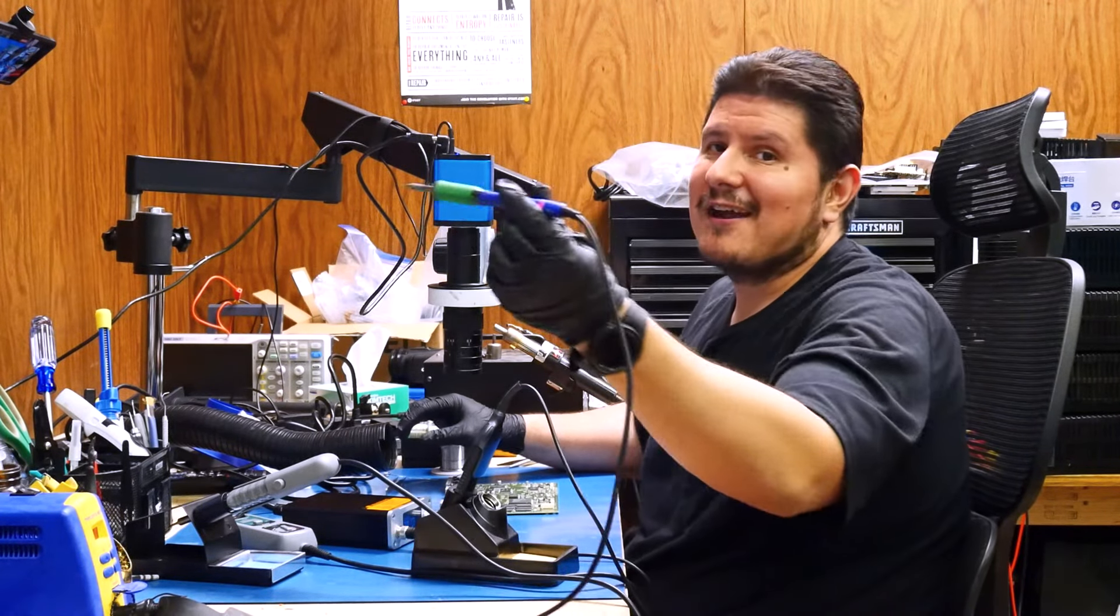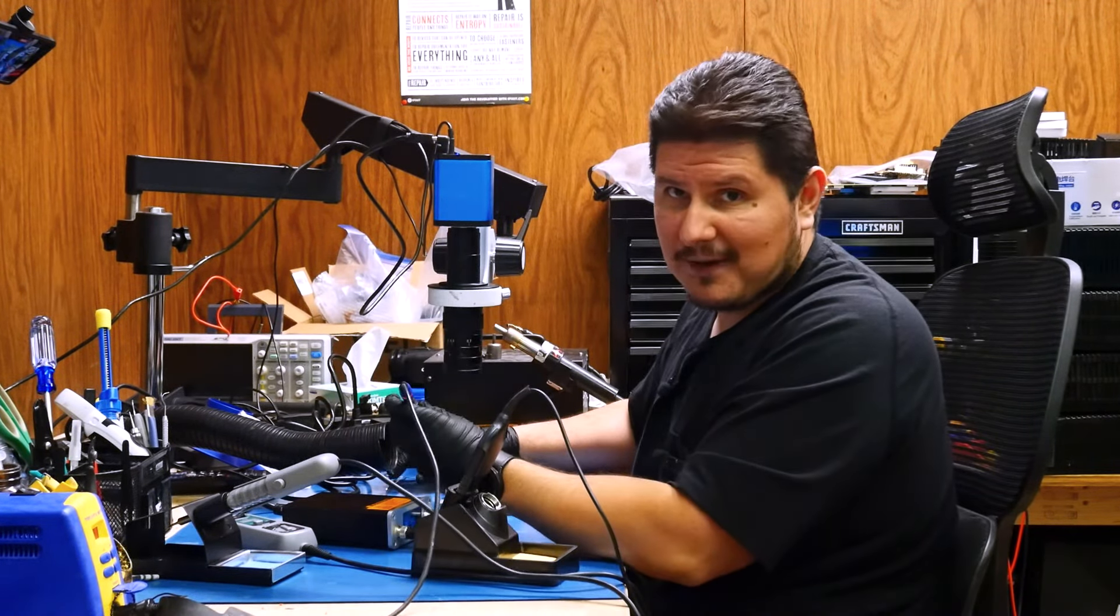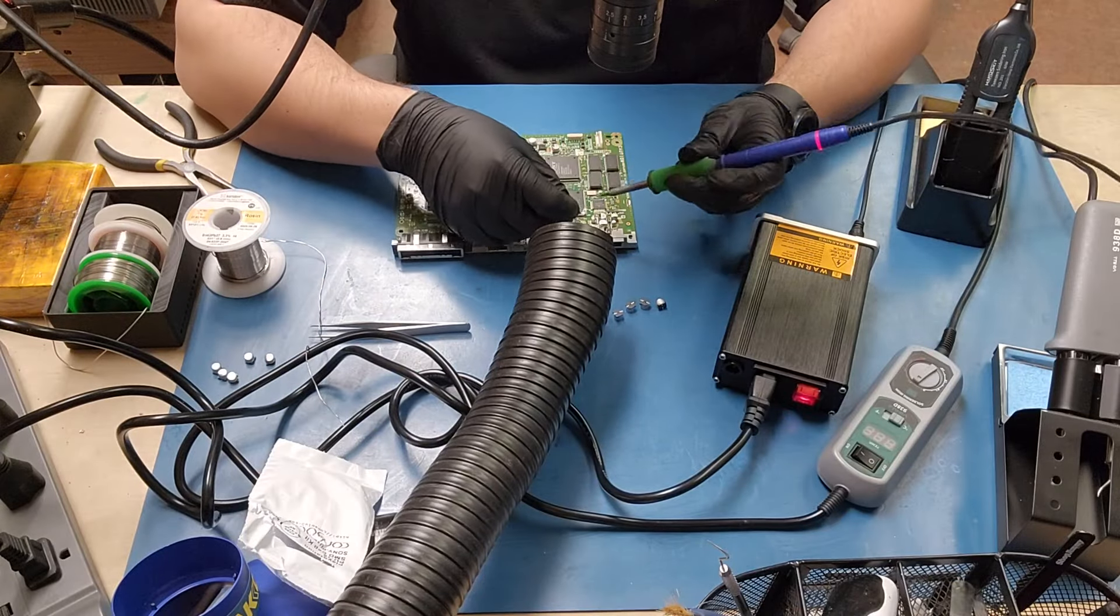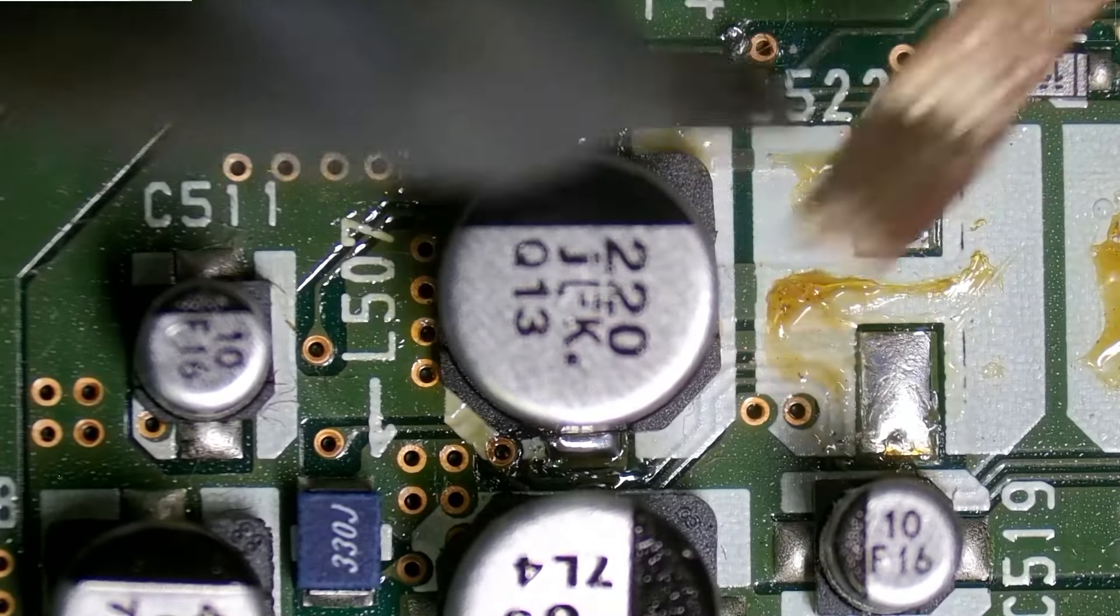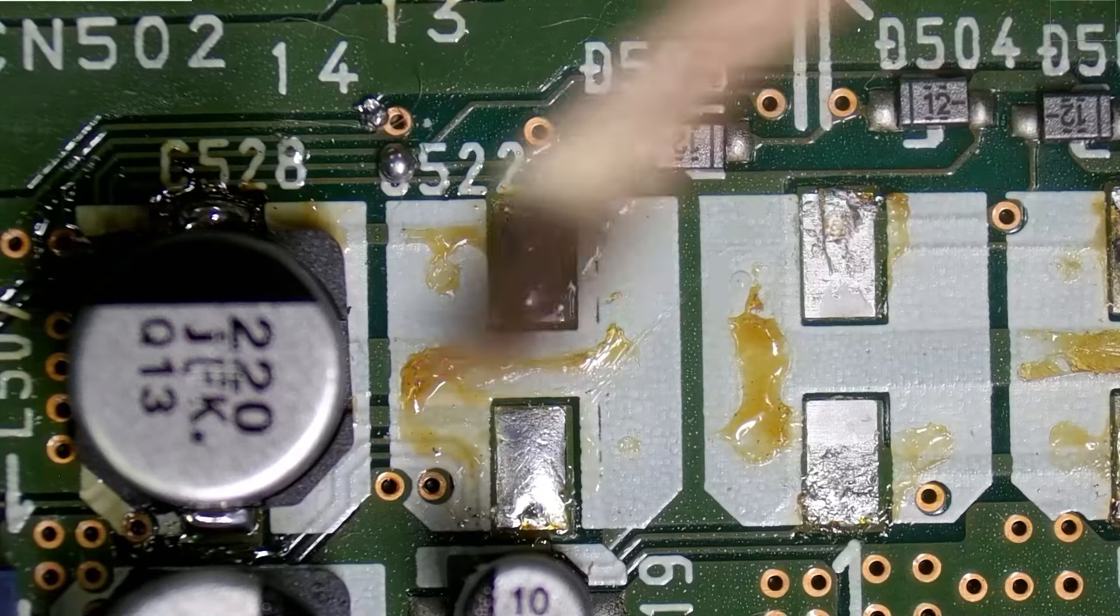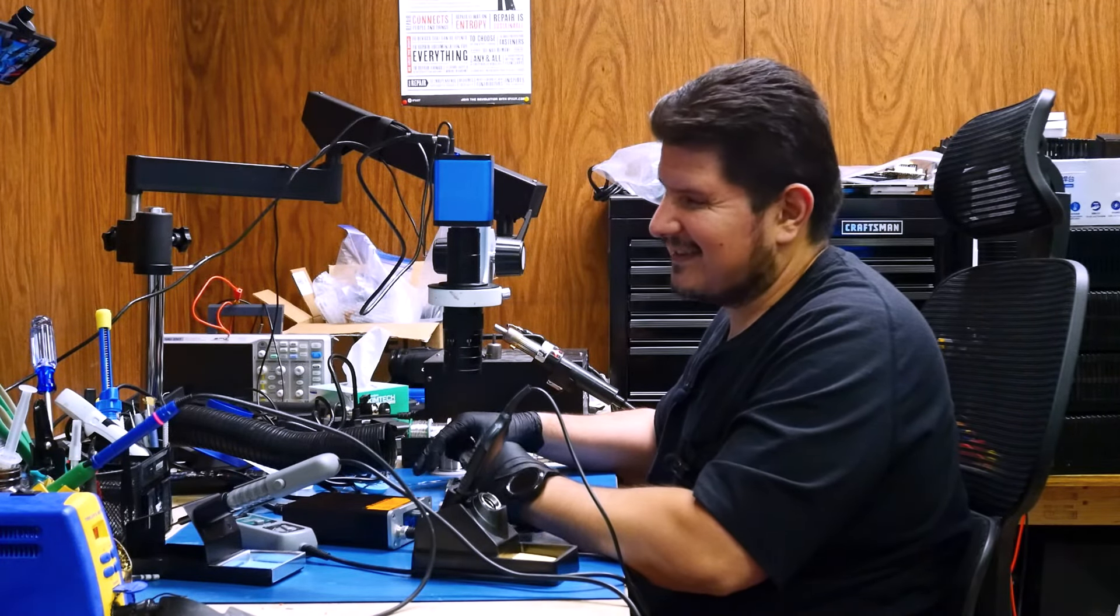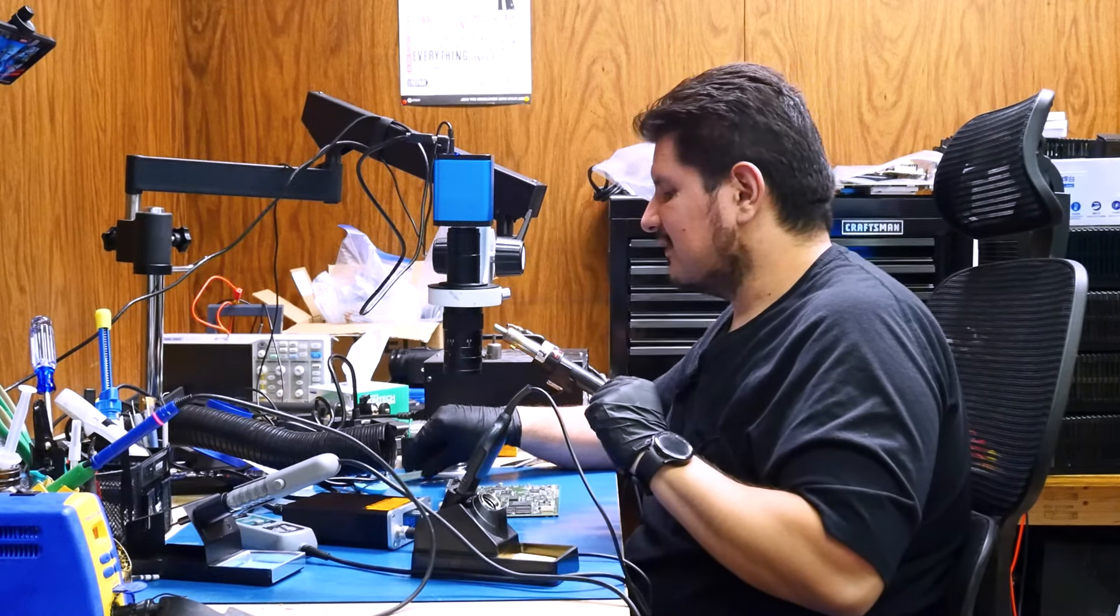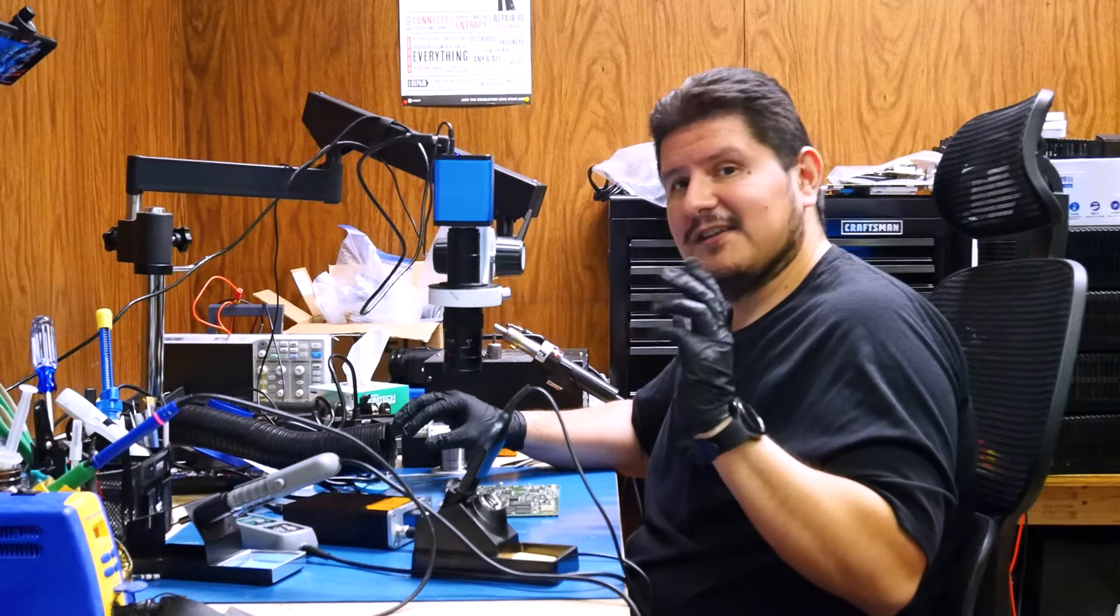So obviously the other two can't really do any desoldering unless I swap out tips. And that's not really what the point of the video is. I'm going to have the Hakko cheat for them. And I'm going to clean up the pads for the remainder off camera. So we have three tries, technically four, if you count that hidden capacitor at the bottom for these tools to reattach capacitors. So let's find out.